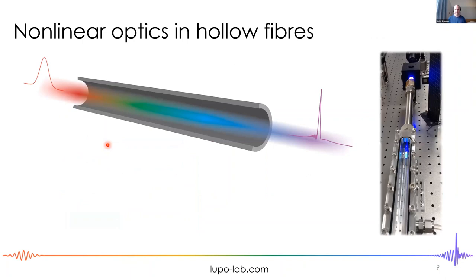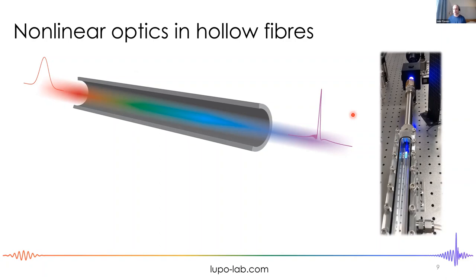What I'm going to talk about today is nonlinear optics in gases inside hollow fibers. The basic idea is we have a hollow fiber, fill it with gas, put our pulses in, and by tuning the gas pressure, core size, and pump pulses, we determine what pulses are generated. This system has nice features: dispersion and nonlinearity are easily tuned with gas pressure, and it's transparent from the X-ray to the mid-infrared.